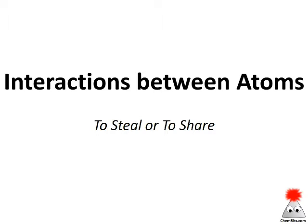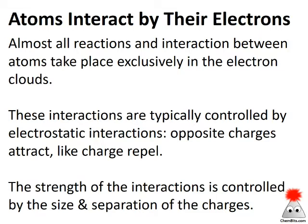Once we have a reasonable understanding of how atoms behave, we have to start looking at how those atoms interact, because chemistry is the study of matter and its changes. Those changes require that atoms interact with one another. Almost all of the reactions and interactions in chemistry are taking place in the electron clouds around the atoms. The nuclei are very rarely directly involved — they're just there as the positive charge that defines the atoms. Most interactions involve electrostatic or Coulombic interactions, where opposite charges attract and like charges repel, and the strength of those interactions is controlled by the size and separation of the charges involved.